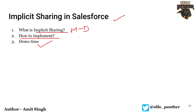This kind of implicit sharing is available in the case of a master-detail relationship. That means when you have access to your parent record, you will automatically get access to the child record — no matter who created that child record. To implement this, whenever there is a master-detail relationship between two objects, the child object's OWD is always going to be controlled by the parent.